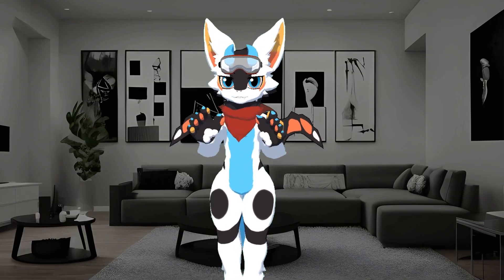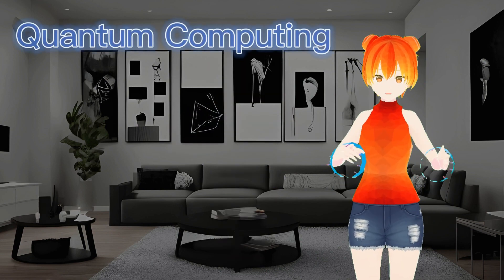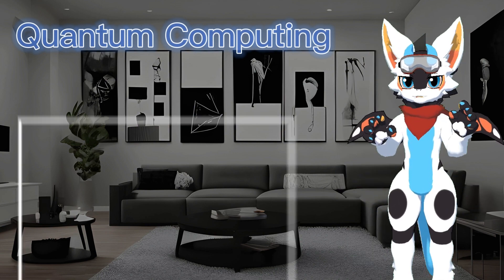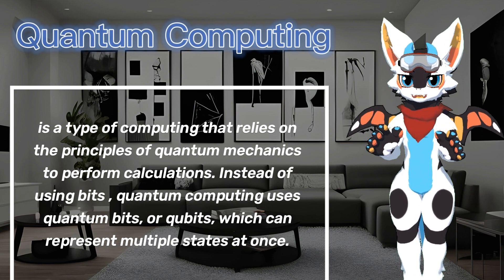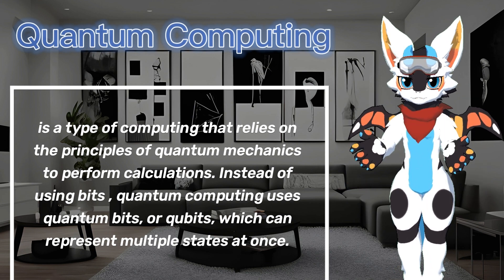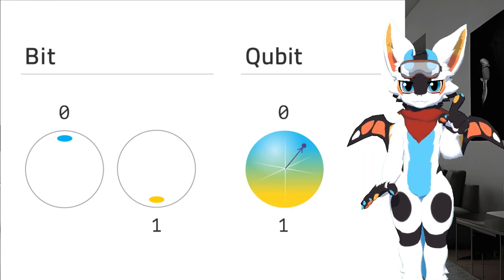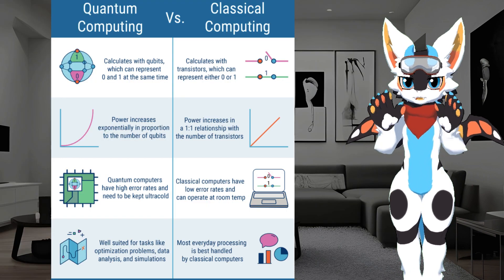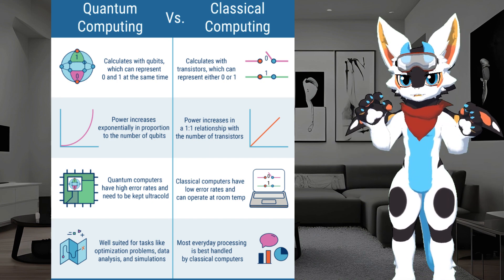Now Buzzy, can you explain quantum computing? Quantum computing is a type of computing that relies on the principles of quantum mechanics to perform calculations. Instead of using bits — the ones and zeros of traditional computing — quantum computing uses quantum bits or qubits, which can represent multiple states at once. This allows quantum computers to solve problems intractable for classical computers, such as factoring large numbers or simulating complex chemical reactions.